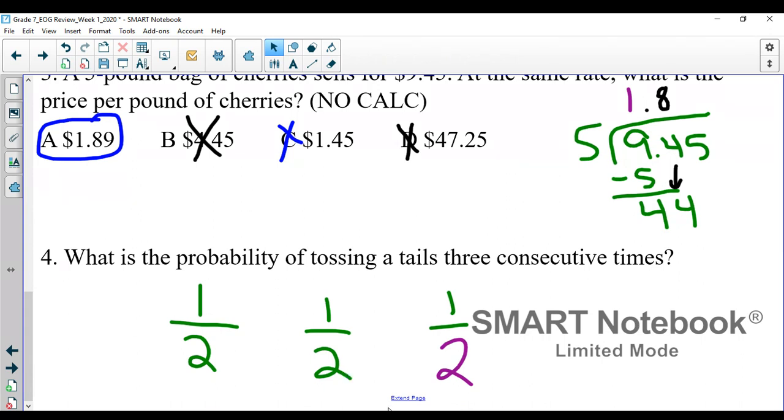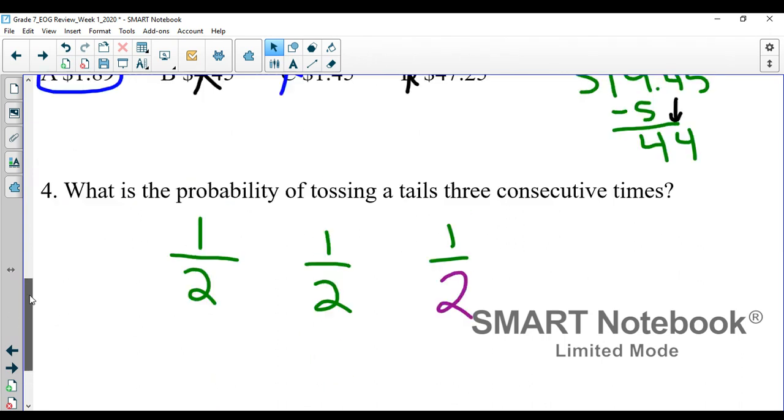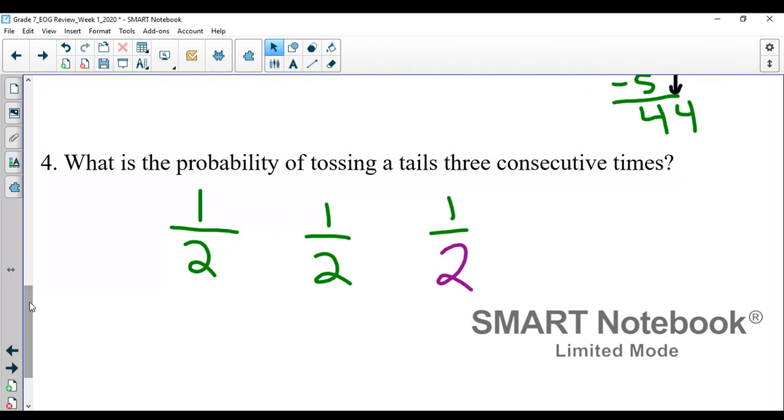Number four says: What is the probability of tossing a tails three consecutive times? That means I'm going to flip a coin and I'm looking for a tails, which is one out of two, a tails, which is one out of two, and a tails, which is one out of two.